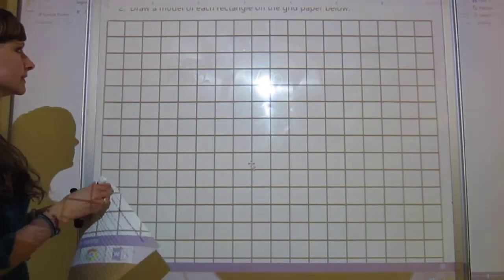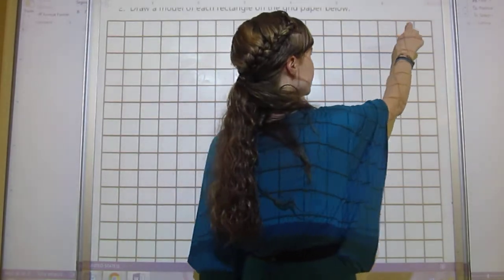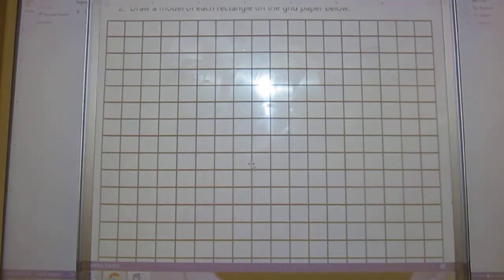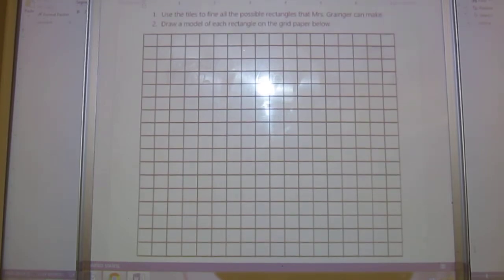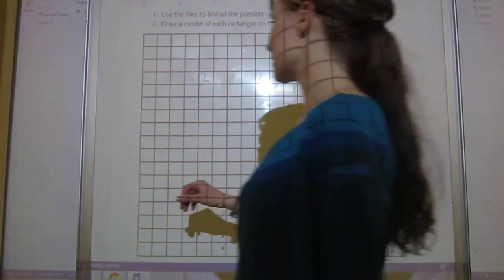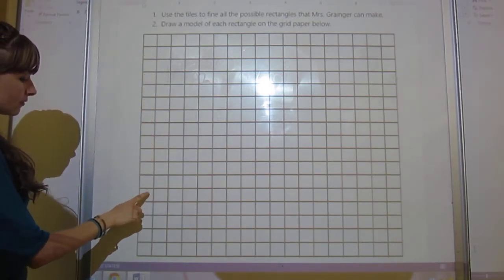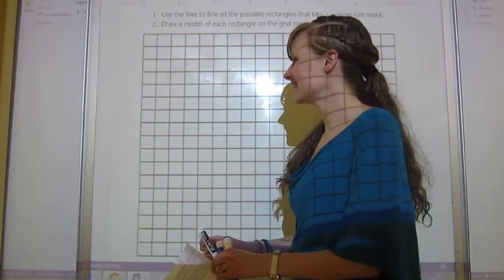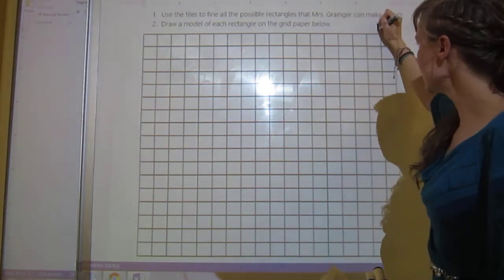All right, so let's see our possibilities. We've got 1, 2, 3, 4, 5, 6, 7, 8, 9, 10, 11, 12, 13, 14, 15, 16, 17, 18—that doesn't let us go all the way across.